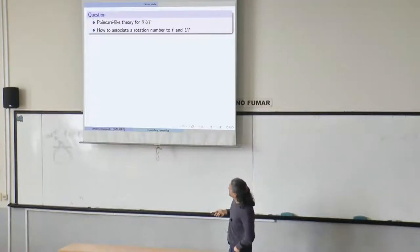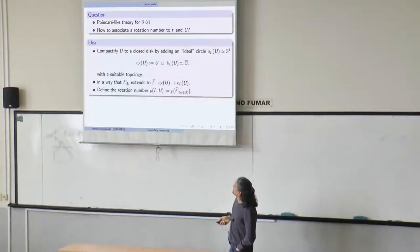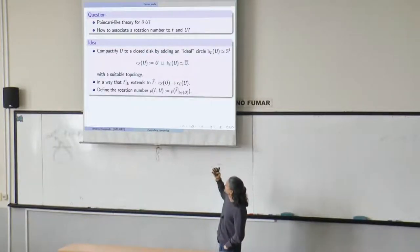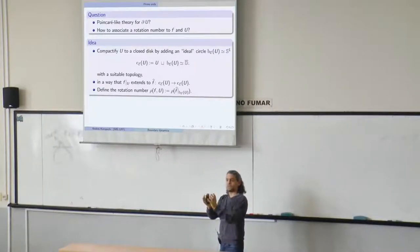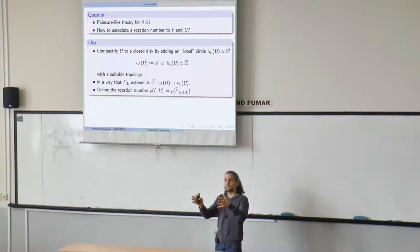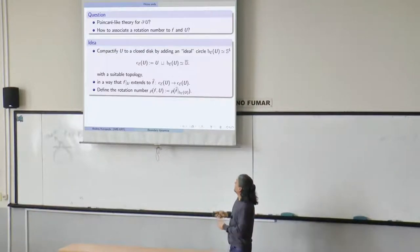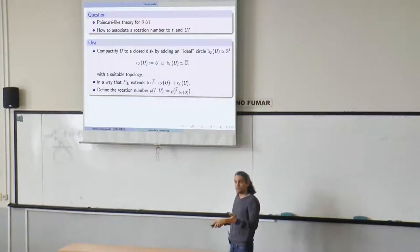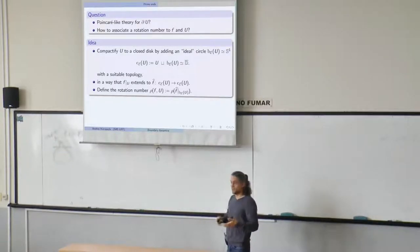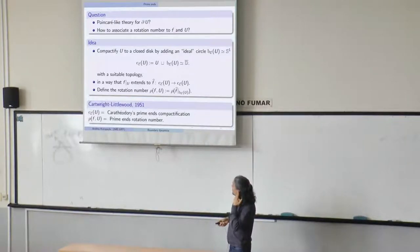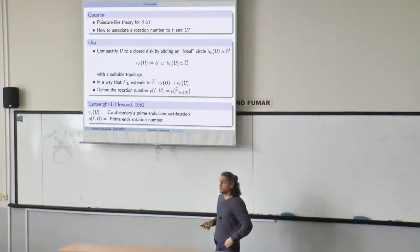So how do we define a rotation number? The trick is to use a compactification which replaces the boundary. You take the open disk — whose boundary may be very bad — and just replace it by an artificial boundary, which is nice: a circle. If you do it right, the dynamics extends to this compactification, and then you have a circle homeomorphism and can define a rotation number. You can then try to reproduce the Poincaré theory on the circle in this new setting.